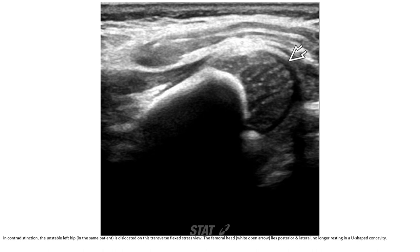In contradistinction, the unstable left hip is dislocated on this transverse flexion view. The femoral head lies posterior and lateral, no longer resting in the U-shaped joint cavity.